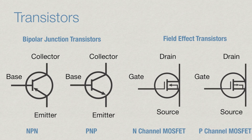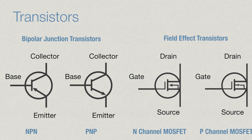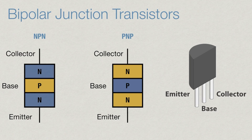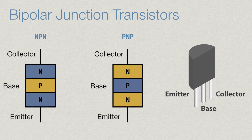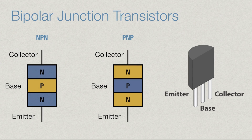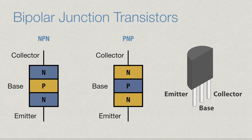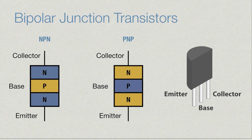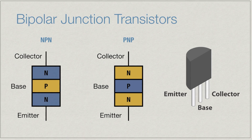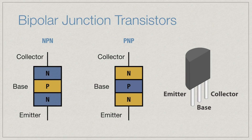Two of the most common transistors are bipolar junction transistors and field effect transistors, and we're going to see a lot of them in circuit diagrams. We're mainly going to focus on bipolar junction transistors. BJTs contain both a P-type, which contains a positive charge carrier, and an N-type semiconductor, which contains a negative charge carrier. NPN transistors contain a P-type between two N-types, and PNP transistors contain an N-type between two P-types. By changing the voltage on the base and the emitter, you control the flow of current through the transistor.